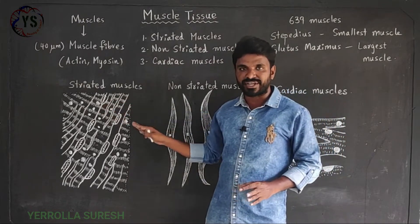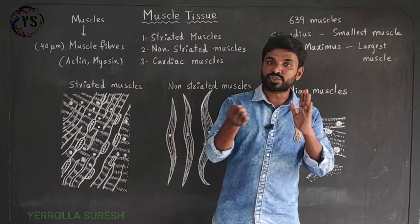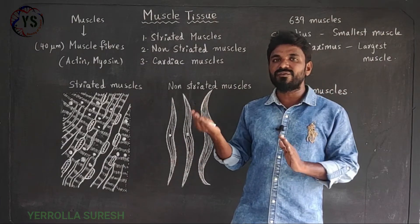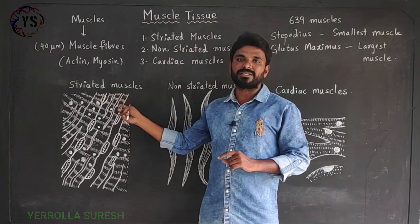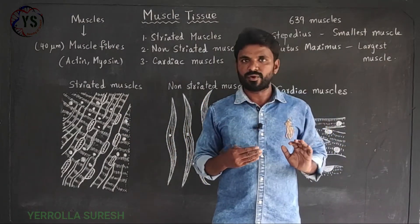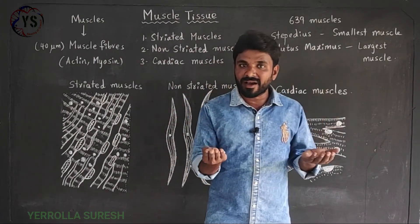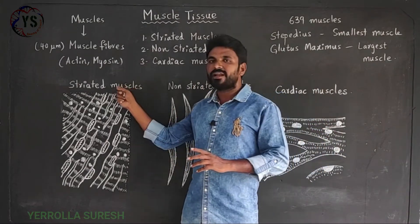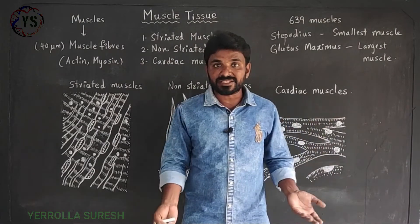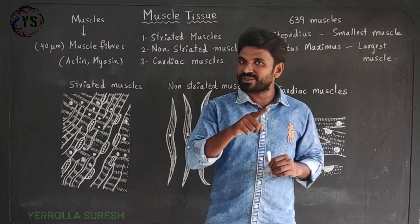Where are striated muscles located? They are attached to the bones of the body. The entire skeletal system is attached with some muscles, and the muscles which are attached to the skeleton are called striated muscles. These striated muscles can create movements inside the bones, meaning they indirectly create movement in the organ where the bones are present. Striated muscles are responsible for external body parts — they create movement so we can move our hands, legs, and neck.